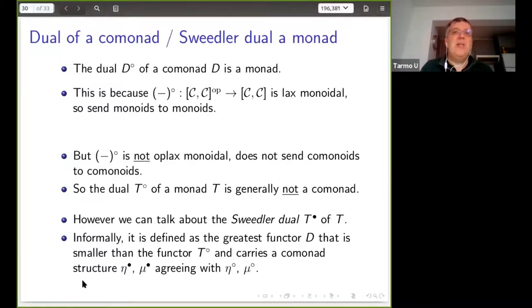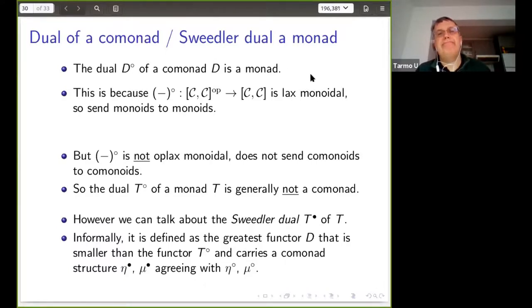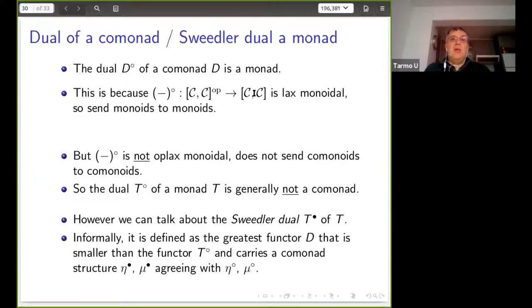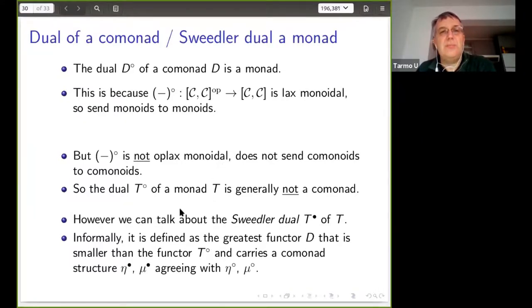The dual of co-monads is also easy: if you've got a comonad, you can dualize the underlying functor and it will be a monad, because dualization is lax monoidal — it sends monoids to monoids, and since it's a contravariant functor, it sends comonads to monads. But dualization is not oplax monoidal, so it doesn't send co-monoids to co-monoids. Therefore, the dual of the underlying functor of a monad is not necessarily a comonad.